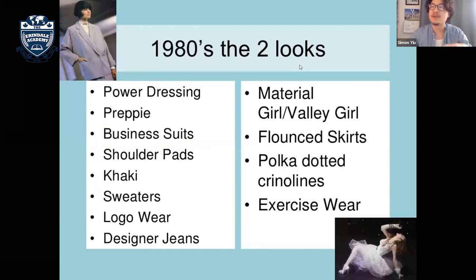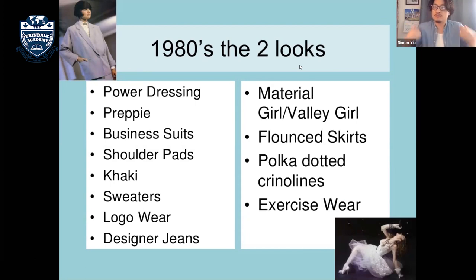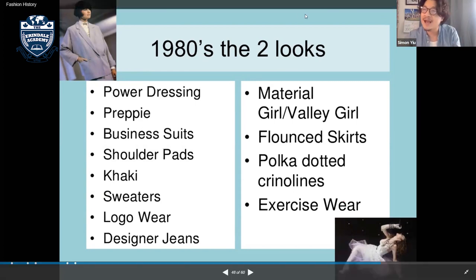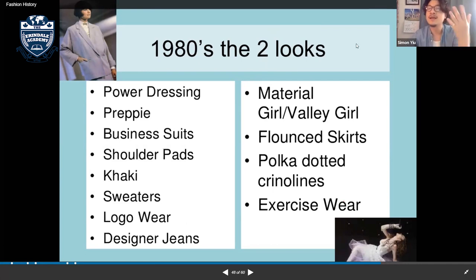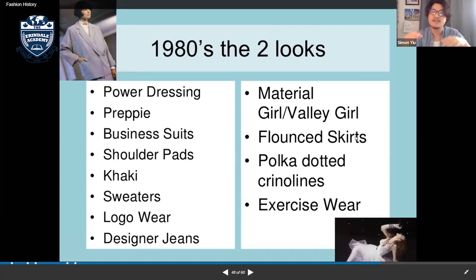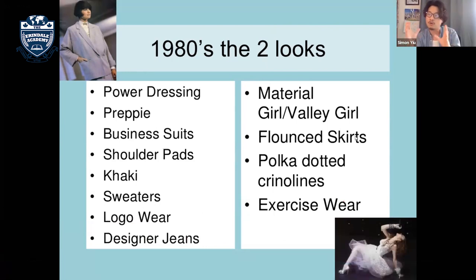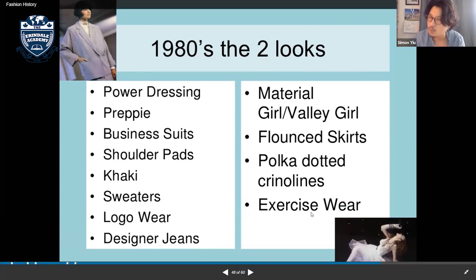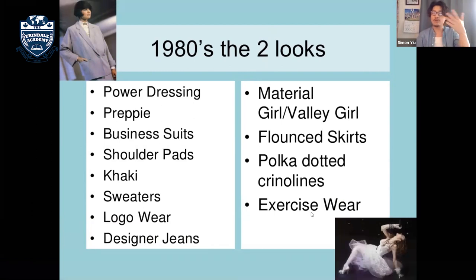Two 1980s looks dominated: power dressing — dressing for work with suits and shoulder pads to make shoulders look wider — and the preppy look with khaki pants and sweaters. The other look was more 'material girl' or valley girl: flounce skirts, polka dot carousels, and exercise wear for gym and yoga.